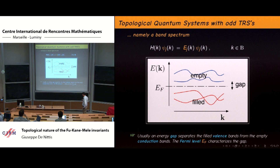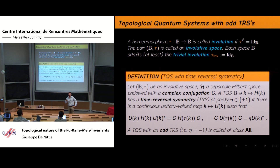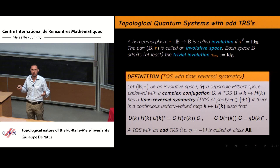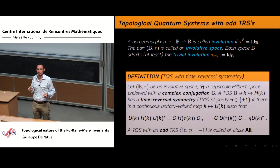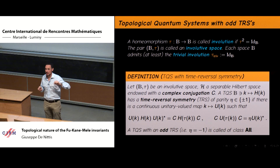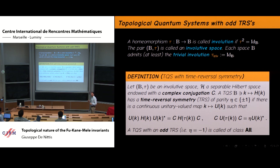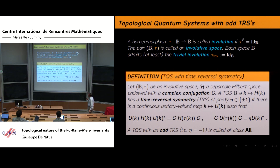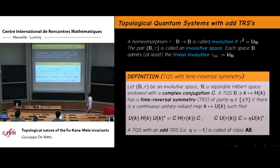An important ingredient in physics are symmetries. One symmetry which plays a role is called time reversal symmetry. In bosonic systems, this is just the symmetry induced by complex conjugation. For fermions, we have to multiply the complex conjugation by a rotation in the spin states. At the mathematical level, we can introduce time reversal symmetry in a more formal way. First of all, we need a little bit of structure on the Brillouin zone — we need an involution, which is just a map that squares to the identity.